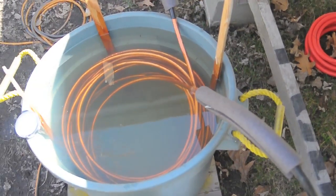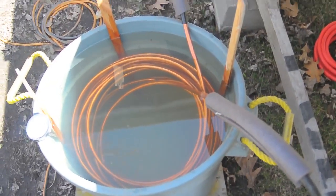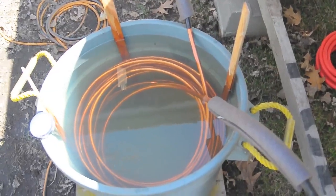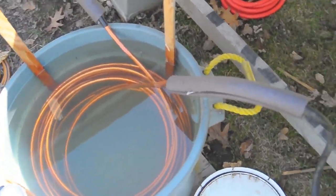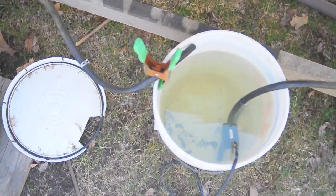That tub is about somewhere between 10 and 15 gallons. So the water cycles through that copper pipe, then back out into that five gallon bucket again.